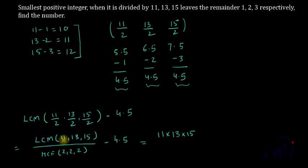So the LCM of 11, 13, and 15 will be the product of 11, 13, and 15, and HCF of 2, 2, and 2 will be 2, and then we have to subtract 4.5 from this.